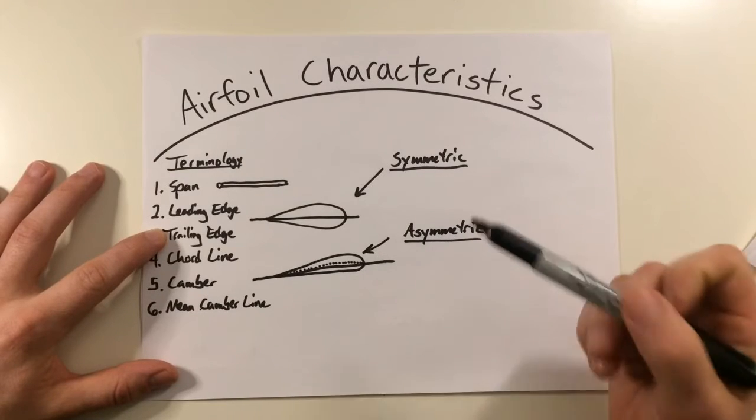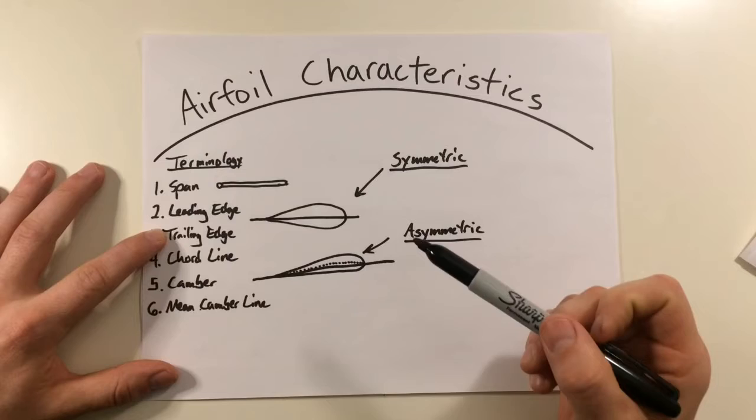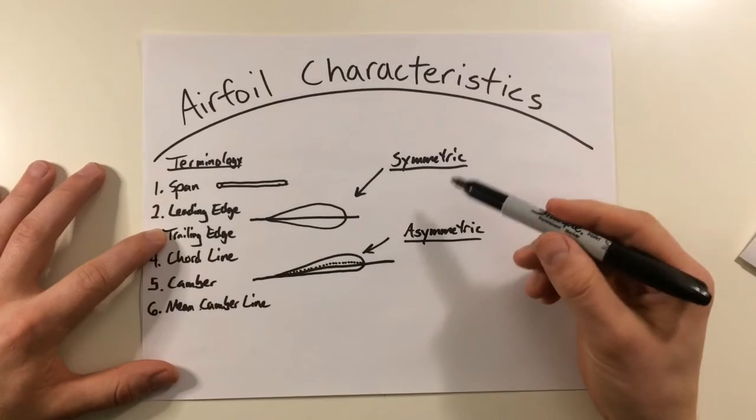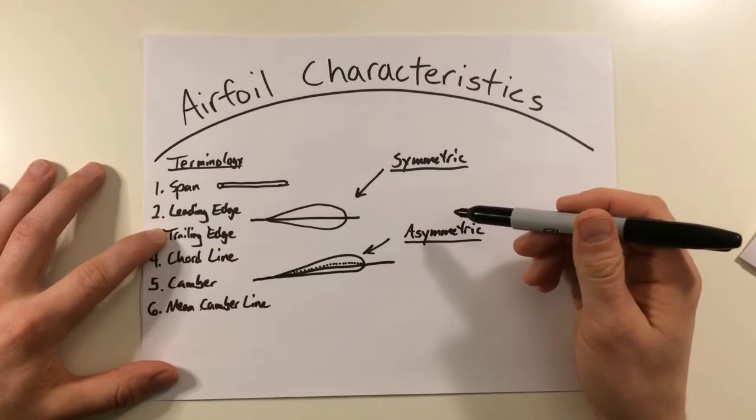Asymmetric, this is a larger upper camber. The chord line is different from the main camber line. But both types of airfoils have their own advantages and disadvantages.